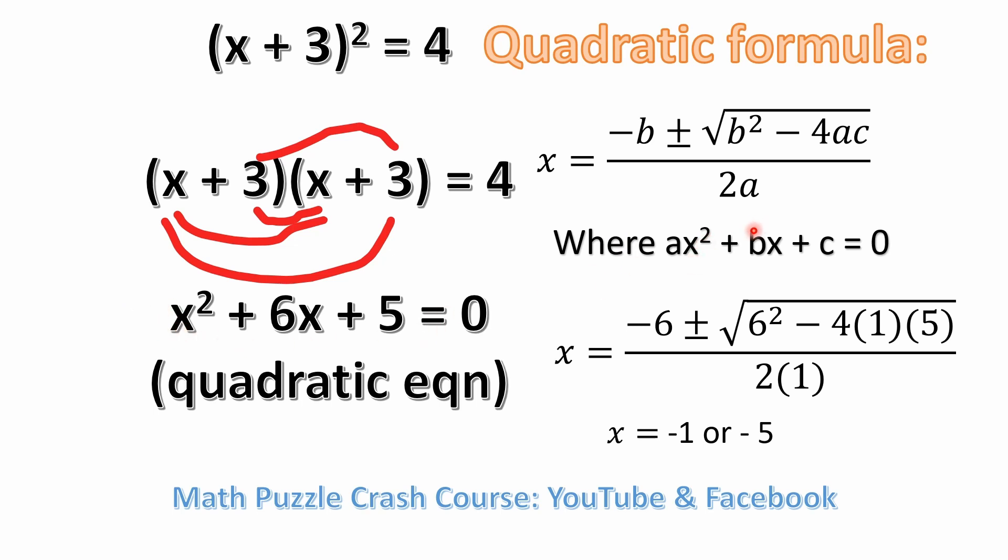And then if you look here, where we have bx in this format, well, we have 6x here. So b must be equal to 6. And then we have bx plus c. Well, here our c is equal to 5.